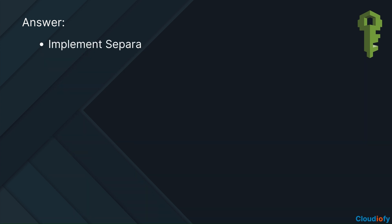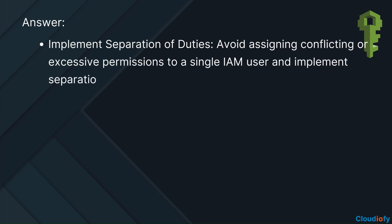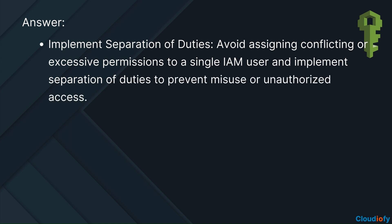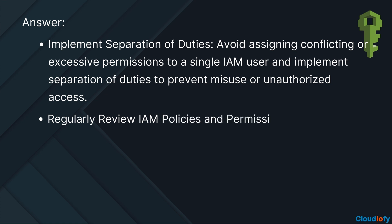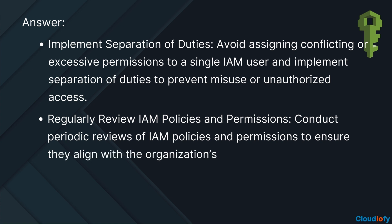Implement separation of duties — avoid assigning conflicting or excessive permissions to a single IAM user, and implement separation of duties to prevent misuse or unauthorized access. Regularly review IAM policies and permissions — conduct periodic reviews of IAM policies and permissions to ensure they align with the organization's security requirements and best practices.